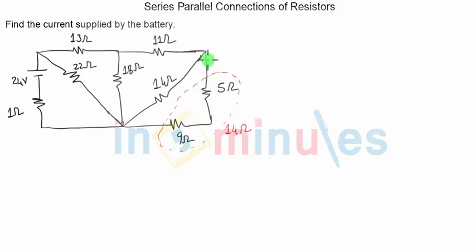You can see that this 14 ohm and this 14 ohm, they will come in parallel. Two equal resistors in parallel will have an equivalent value which is half of the original value. So we will have 14 parallel 14 which is equal to 7. After doing these two simplifications,